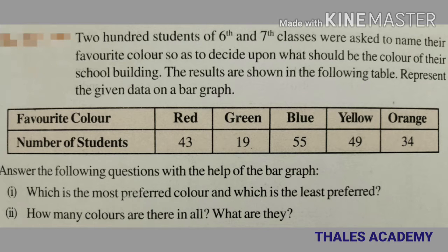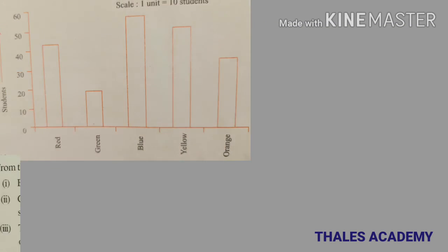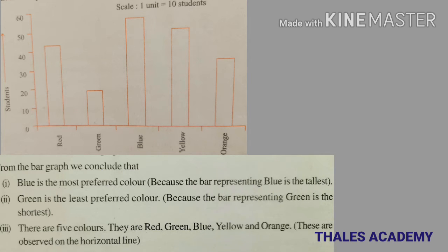We take one unit for 10 students. From the bar graph we conclude: first, blue is the most preferred color because the bar representing blue is the tallest. Second, green is the least preferred color because the bar representing green is the shortest. Third, there are five colors — red, green, blue, yellow, and orange — observed on the horizontal line.